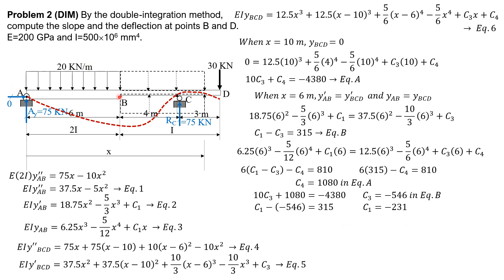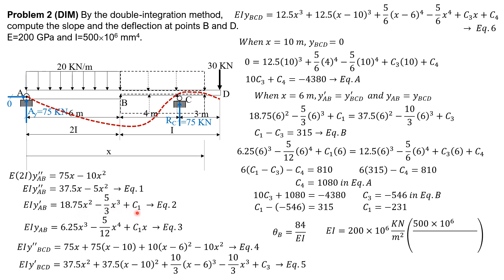We can now compute theta B and delta B. We use equation 2 for theta B (fewer terms). When X is 6: EI theta B equals 18.75 times 6 squared minus 5/3 times 6 cubed plus C sub 1 (negative 231). So theta B equals 84 over EI.